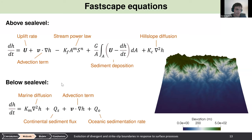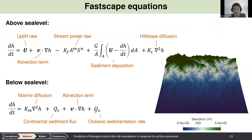Below sea level, Fastscape works similarly with uplift, advection, and diffusion terms, but uses a different diffusion coefficient. The key difference is a continental sediment flux term: sediment eroded by the stream power law that wasn't deposited on land ends up in the ocean. A constant background oceanic sedimentation rate is also added.